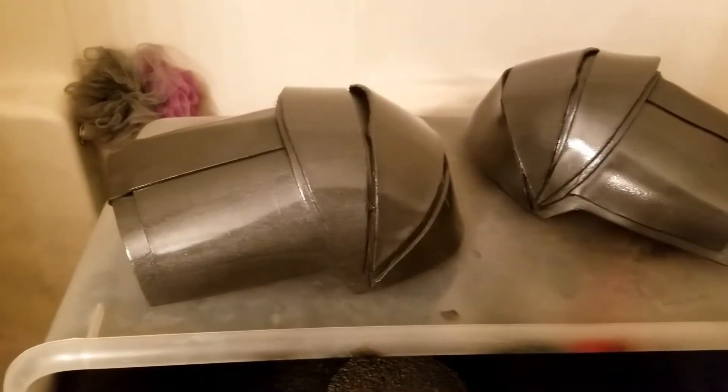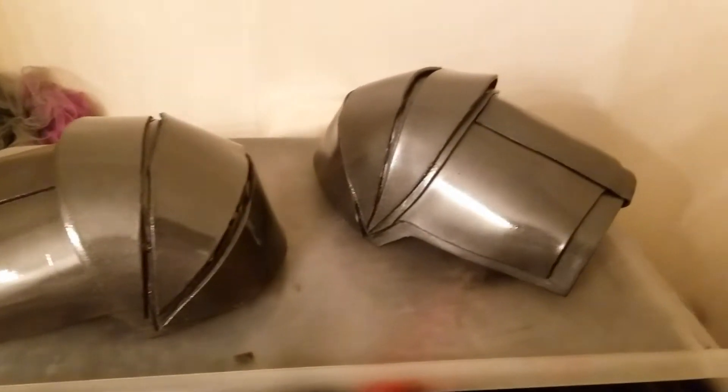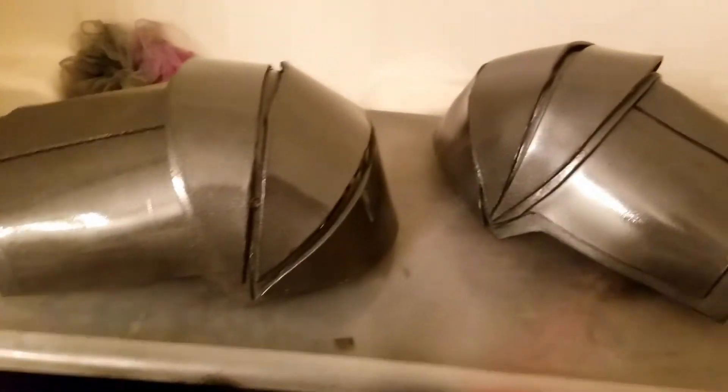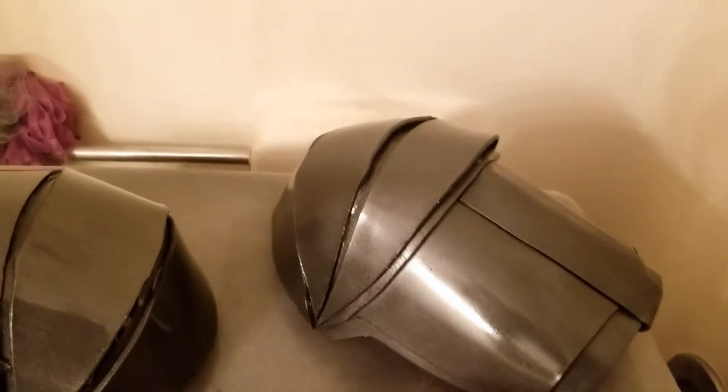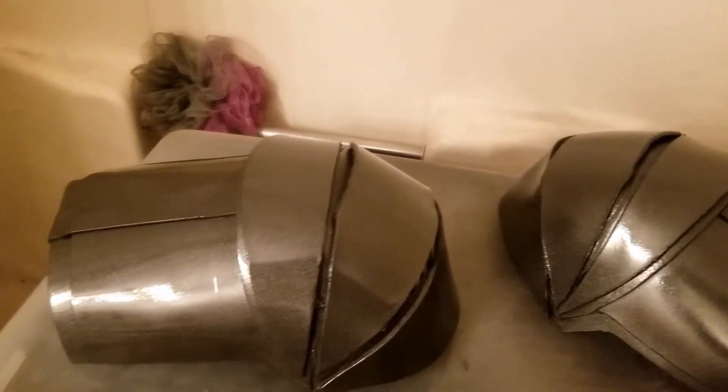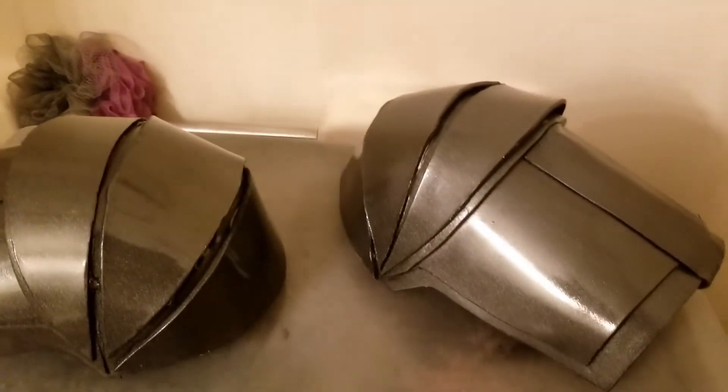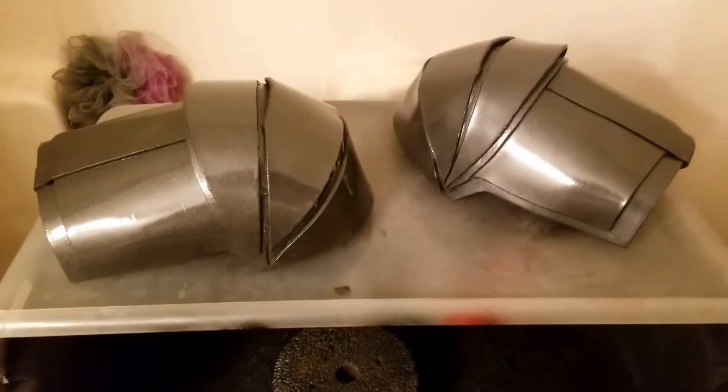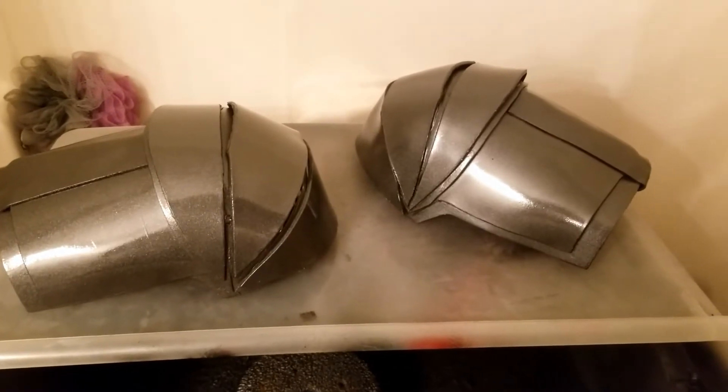After a coat of Rustoleum soft flat iron, we have a pair of basically finished pauldrons. I do need to put a coat of sealer over them, but with those done, it's time to move on to the bracers.